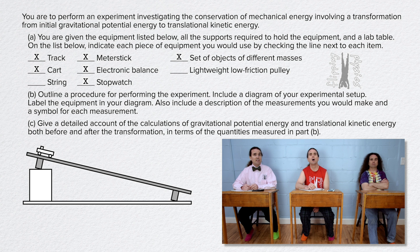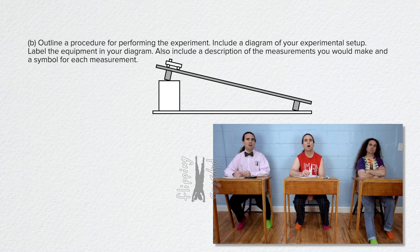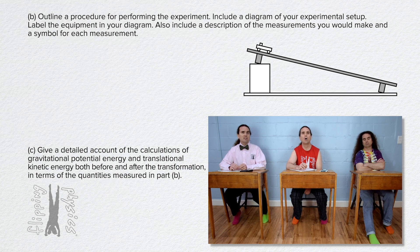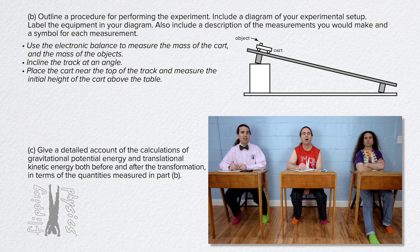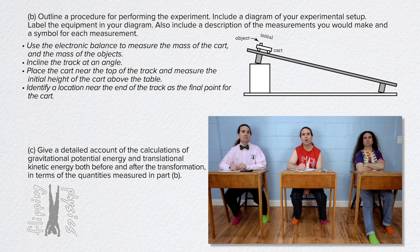For Part B, I need to outline the procedure, include a diagram, label the equipment in the diagram, and include a description of the measurements and a symbol for each measurement. I've got a rough diagram already. Let's label the cart and the objects on the cart. Now let's outline the procedure and describe the measurements. Use the electronic balance to measure the mass of the cart m sub c and the mass of the objects m sub o. Then incline the track at an angle. Place the cart near the top of the track and measure the initial height of the cart above the table, h sub i. We should put the initial point in the diagram as well. Then identify a location near the end of the track as the final point and measure the final height of the cart above the table, h sub f.